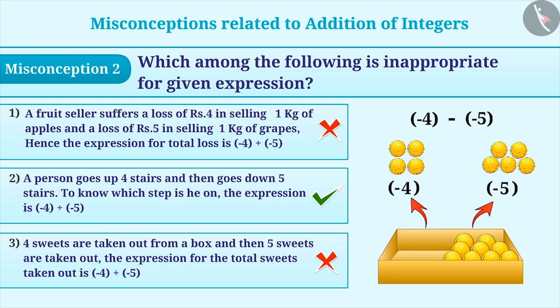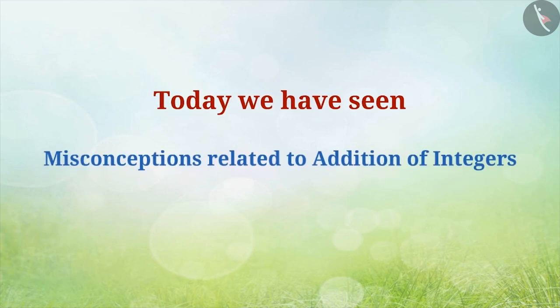Sometimes, to find the number of sweets taken out, the calculation is done and the statement is represented as minus 4 minus minus 5. This is an incorrect way to represent the situation. Today, we have seen some misconceptions related to addition of integers.